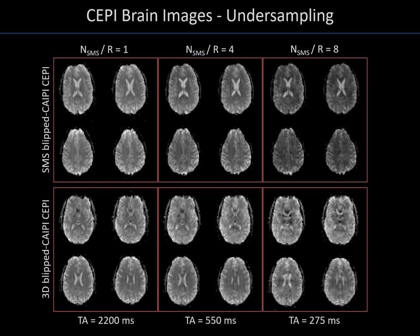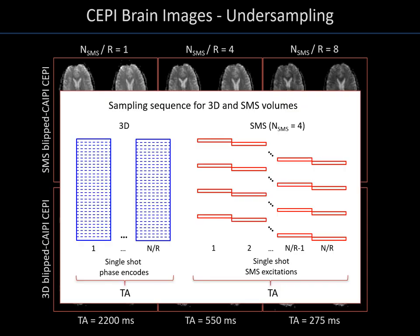One major cause for the loss of SNR at higher acceleration factors in the SMS acquisition is the shorter TR that goes along with it. A quick look at the acquisition timing helps to understand the difference between 3D and SMS sampling. In the case of the 3D acquisition, the entire volume is excited each time, resulting in averaging over the entire acquisition time of the volume. This means that the TR remains unchanged for different acceleration factors, and as a result the SNR of the image is very similar.